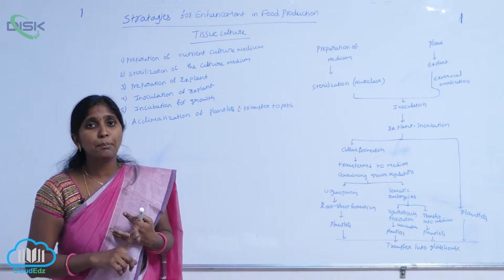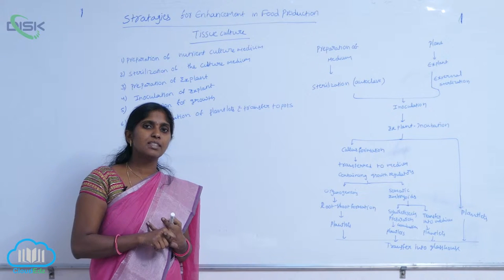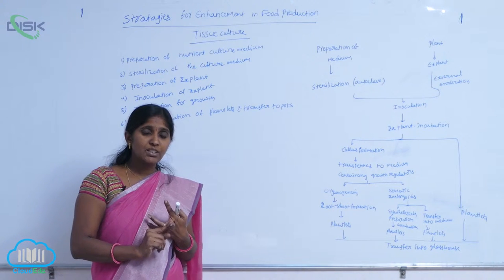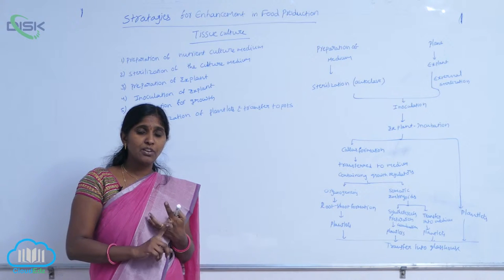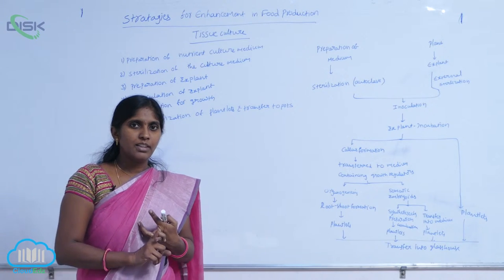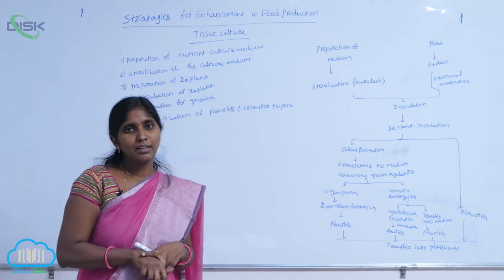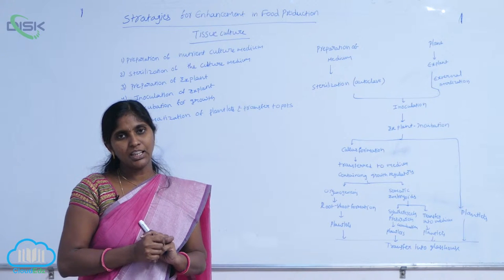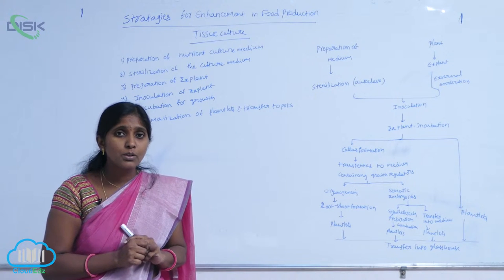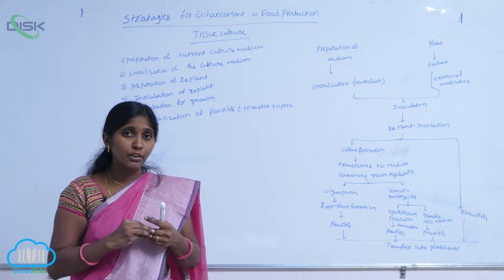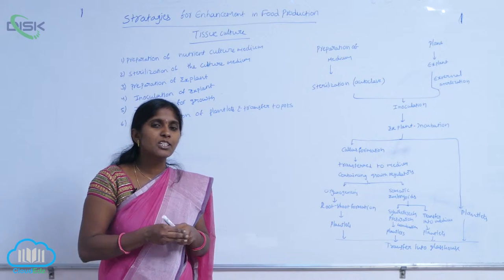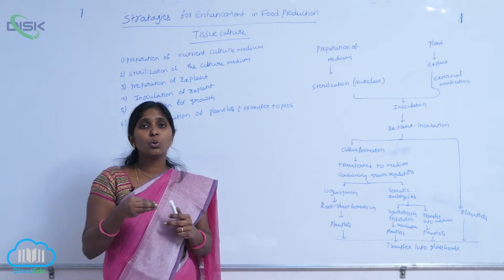Especially, growing apical meristem is used as explant. This is because it is free from contamination and free from viruses. The germplasm and the explant part do not get infections — it is free from contaminations. Also, it is rich in phytohormones, so when it is propagated or cultured in the culture medium, it grows easily.